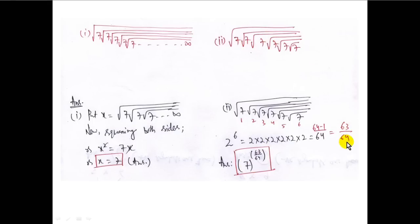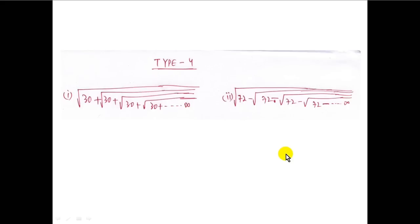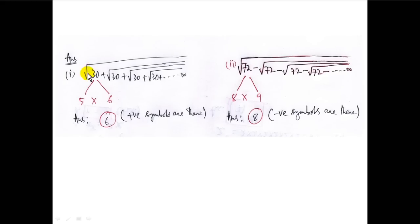Sometimes the question within the square root is additive or subtractive type. If the given number is the product of two consecutive numbers, we can find the solution easily. For example, root over of 30 plus root over of 30 up to infinity — here 30 is the product of 5 and 6, which are two consecutive numbers, and only positive symbols are there.